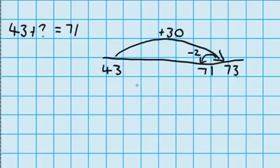So I record what I did. I did a jump forward of 30, and a jump backwards of 2, which means in total I jumped up 28. So 43 plus 28 equals 71.